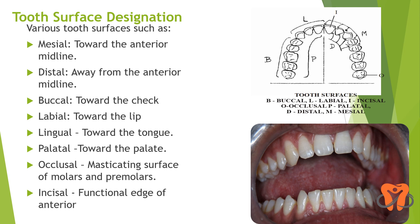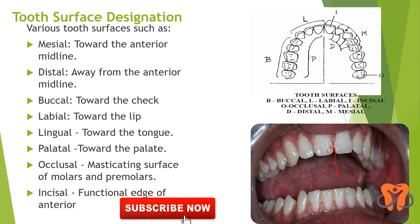Let us first identify the various tooth surfaces. This is the anterior midline. Now the surface of the tooth towards the midline is called the mesial surface, and the surface away from the anterior midline is the distal surface. So this is mesial and this is distal. Now the surface towards the buccal mucosa of these posterior teeth — they are known as the buccal surfaces.